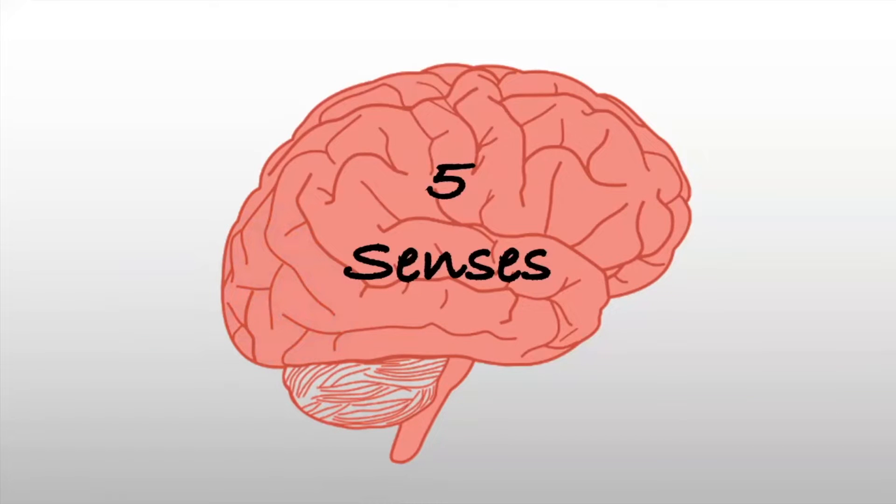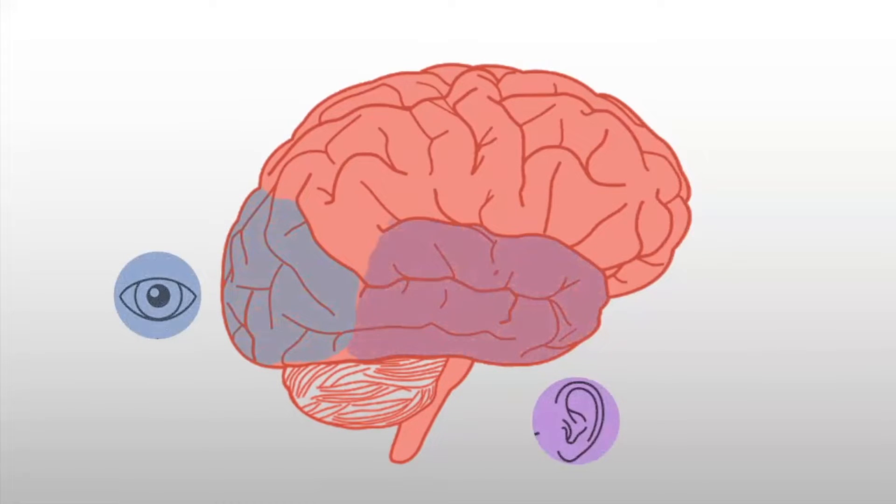There are five main senses that we use to perceive the world around us, and each of these corresponds to a different part of the brain. There's vision, hearing, touch, taste, and smell.